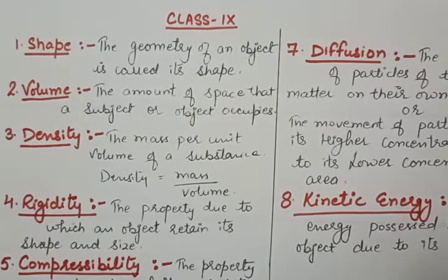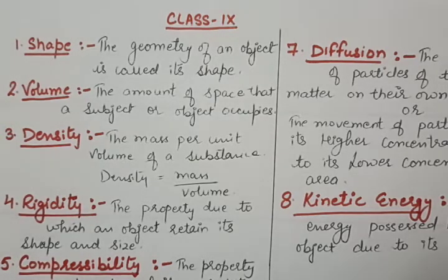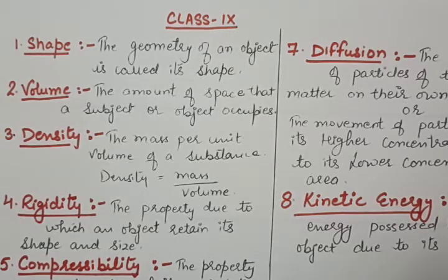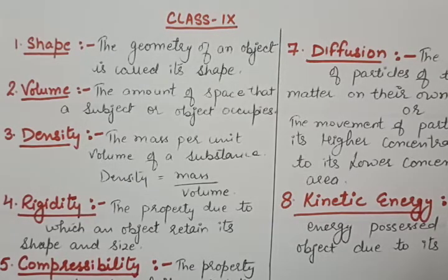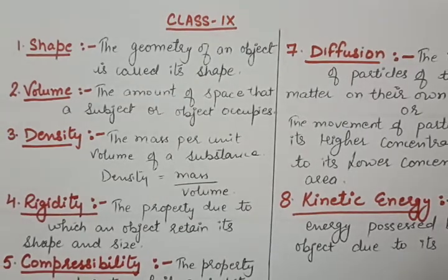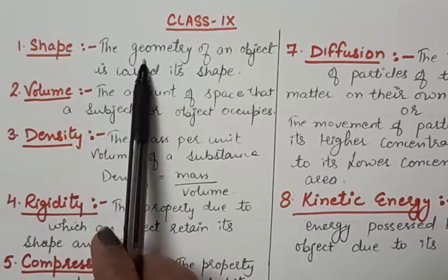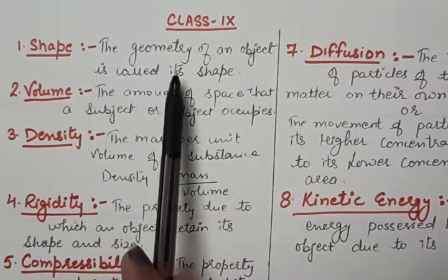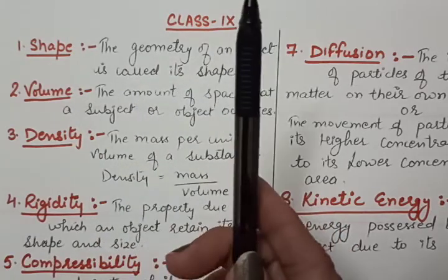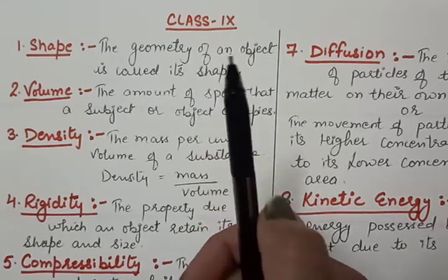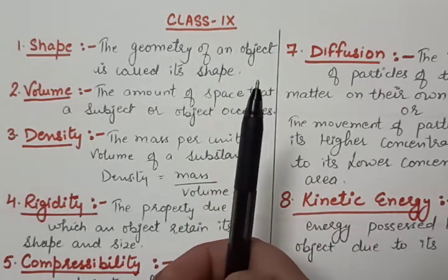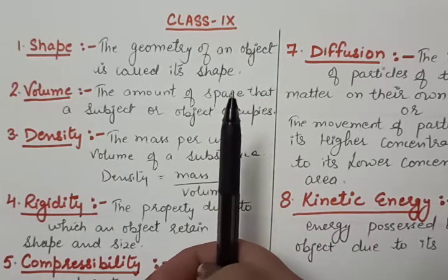Before studying the characteristics of particles, we will first do some definitions. There is a need to understand some important terms. The first one is shape — the geometry of an object is called its shape. That is, how it is appearing to us, that is called its shape.